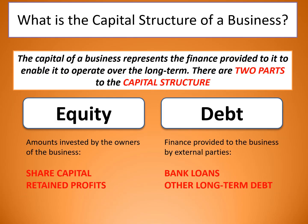When we're talking about capital structure, remember that capital is not just money itself. Capital of a business represents the finance provided to it to enable it to operate over the long term. There are two ways of looking at this: equity — the amounts invested by the owners of the business, such as share capital and retained profit — and debt — things like bank loans, other long-term debts, or mortgages. Share capital and retained profits don't really increase the debt of the business, whereas debt itself will be a part of the business's overall debt — it's more of an external source of finance.